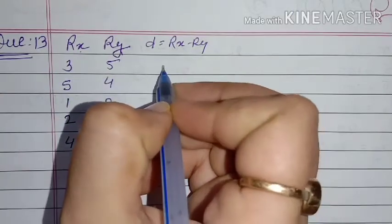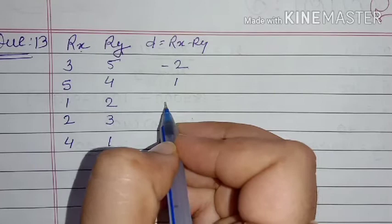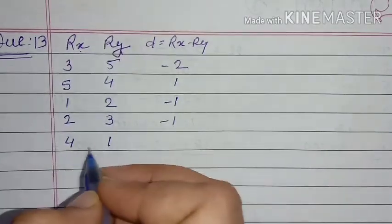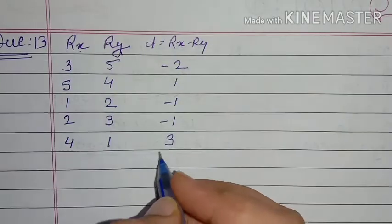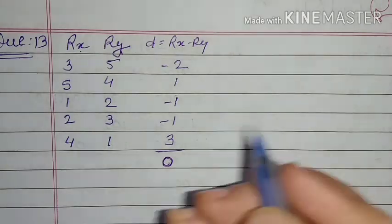3 minus 5 = -2, 5 minus 4 = 1, 1 minus 2 = -1, 2 minus 3 = -1, and 4 minus 1 = 3. The total should always give zero. That means our calculation is right.